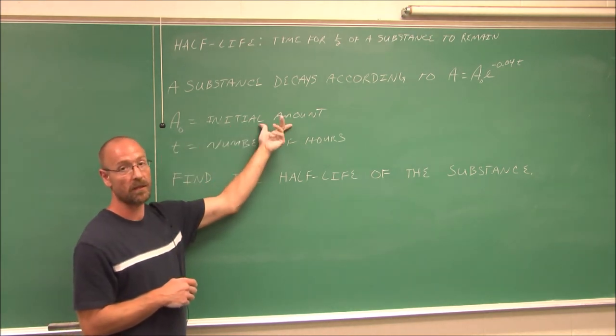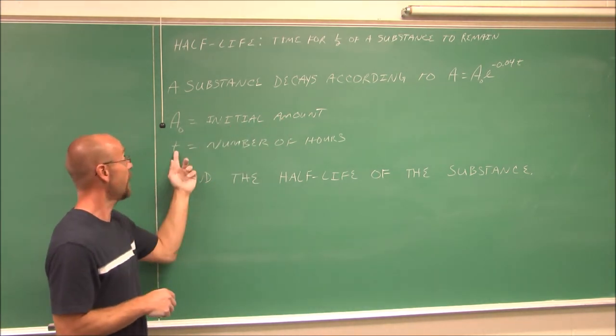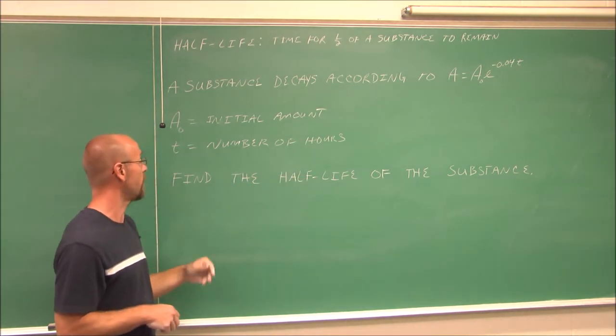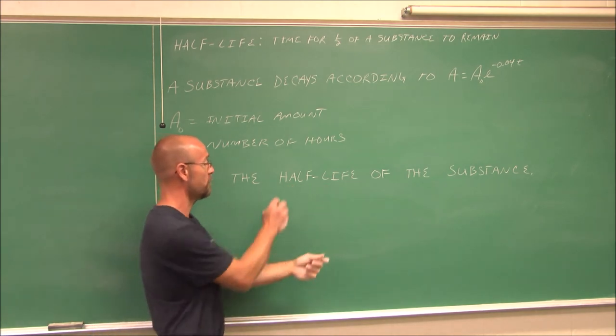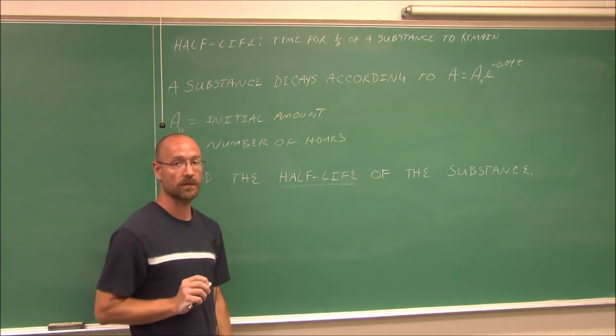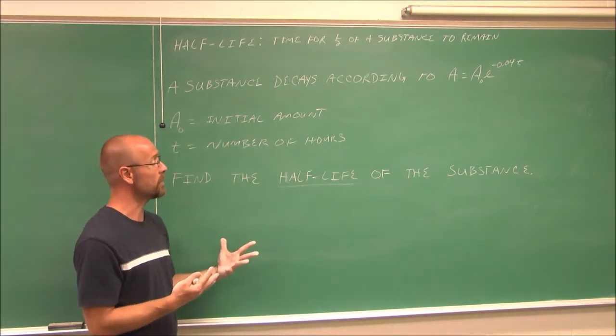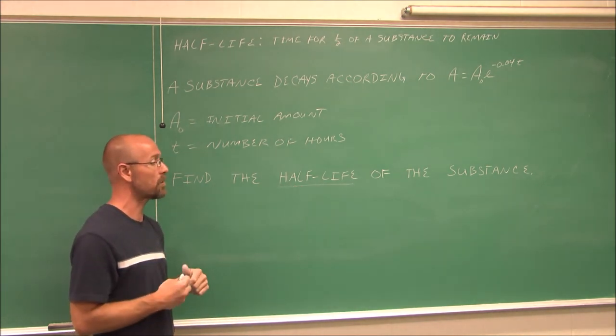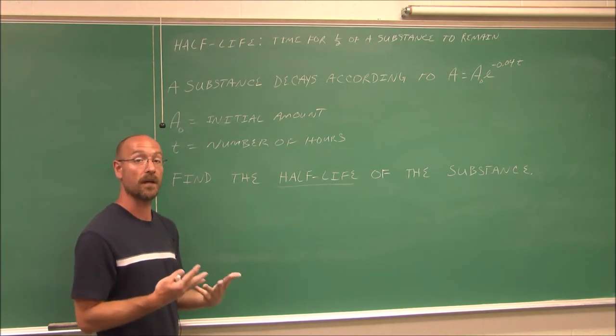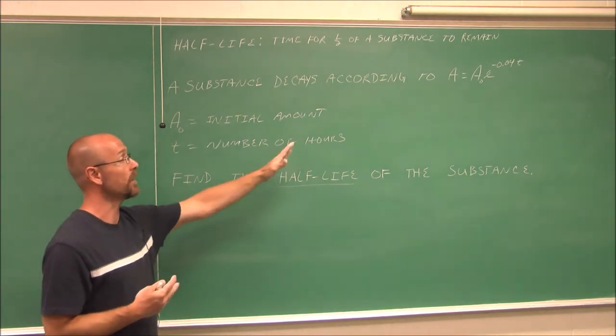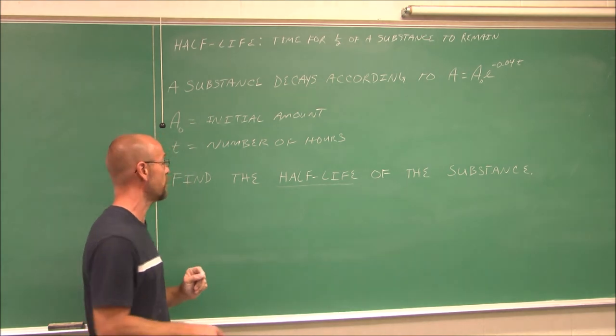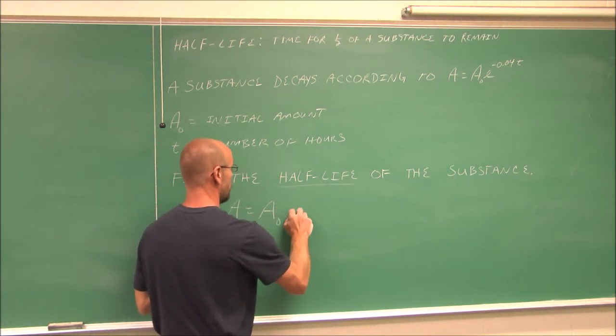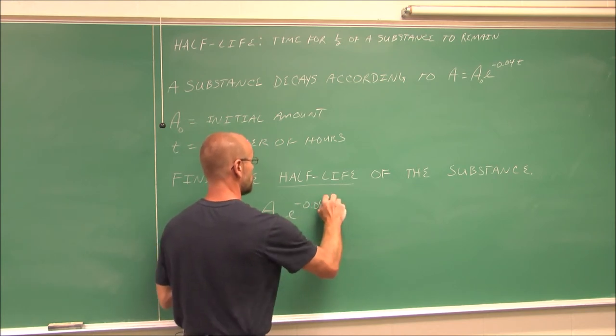If a substance decays according to that formula, what does it mean? a0 is the initial amount of substance, how much we're starting with. And t is the number of hours. We're asked to find the half-life of the substance. We're not given any numbers, we're just asked to find the half-life. This is very similar to the very first example where we were asked, how long does it take to double our money?